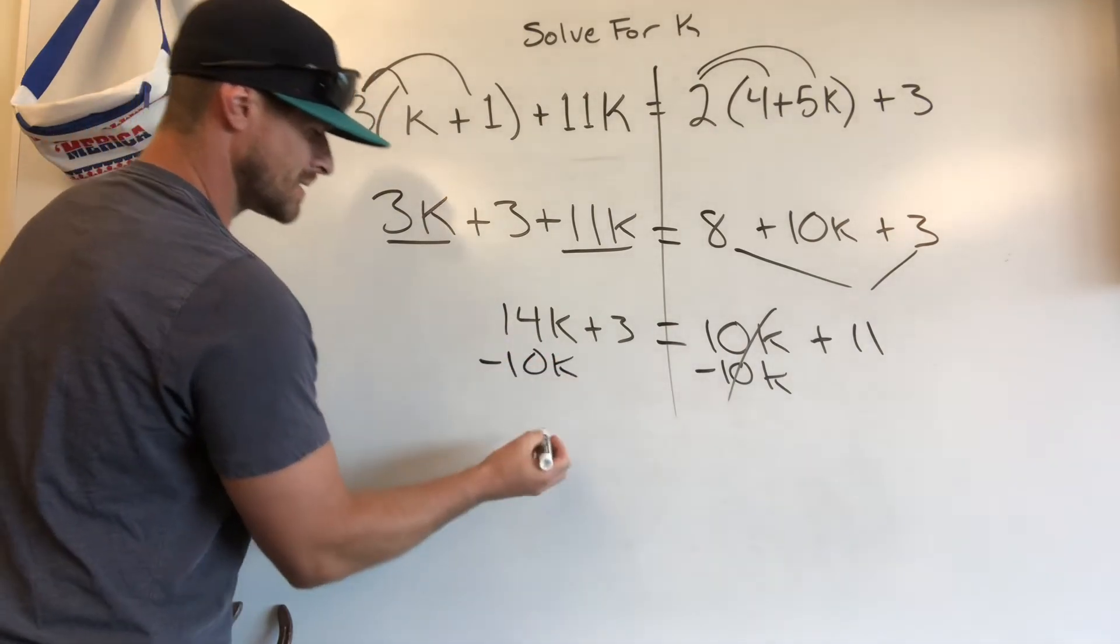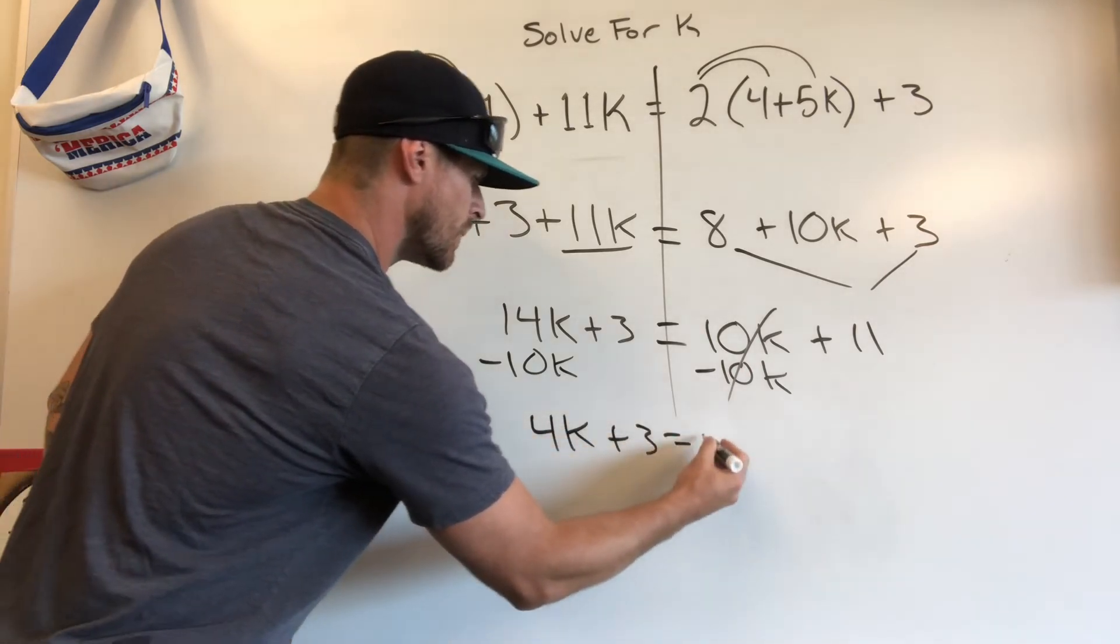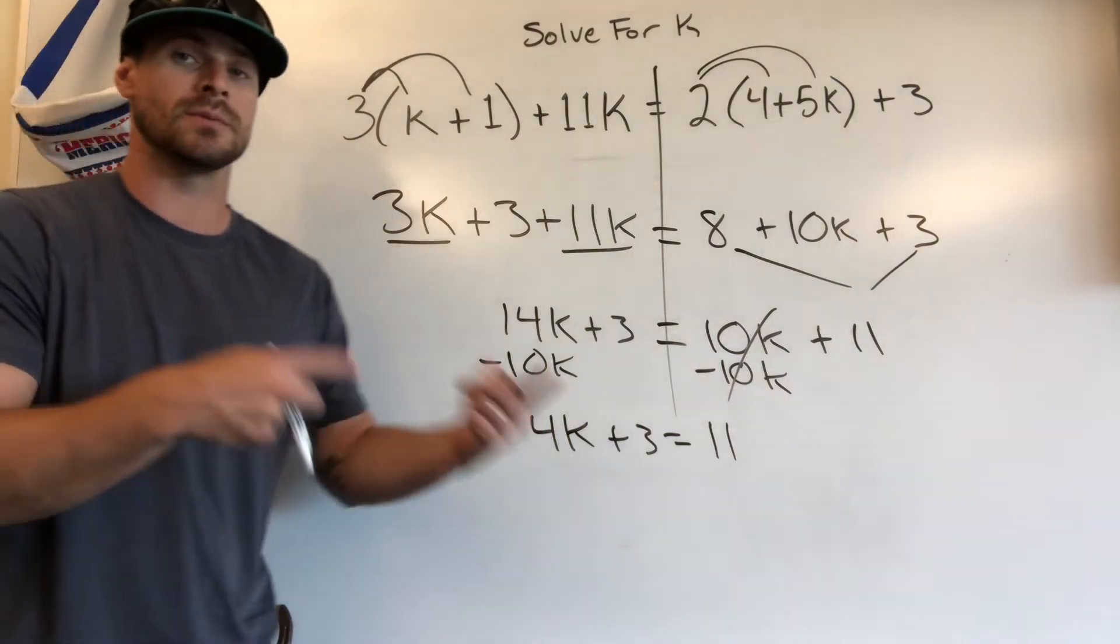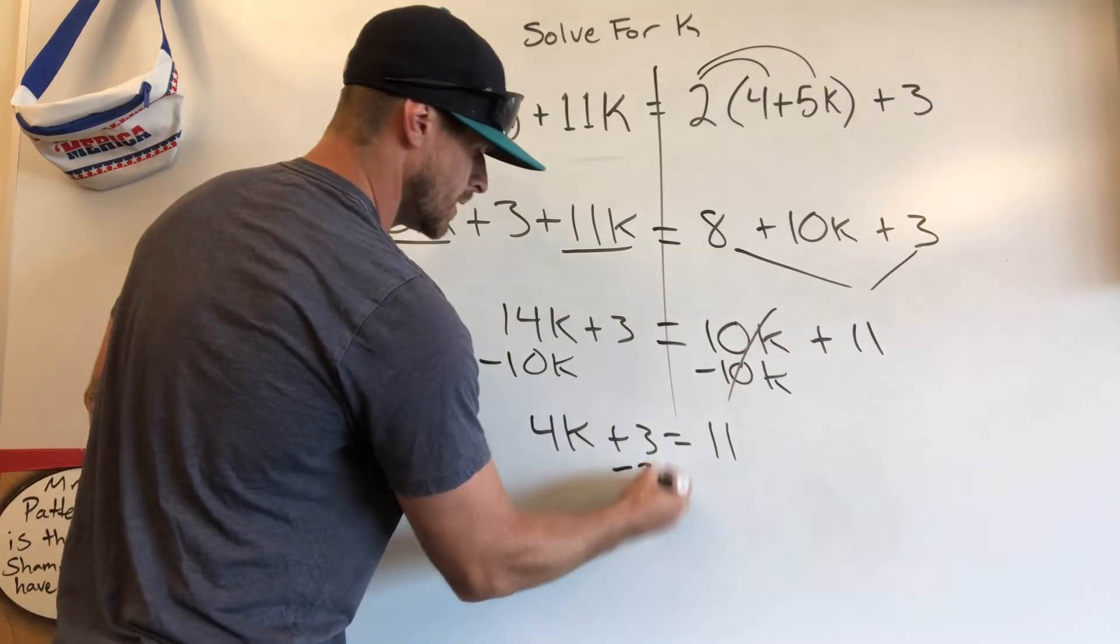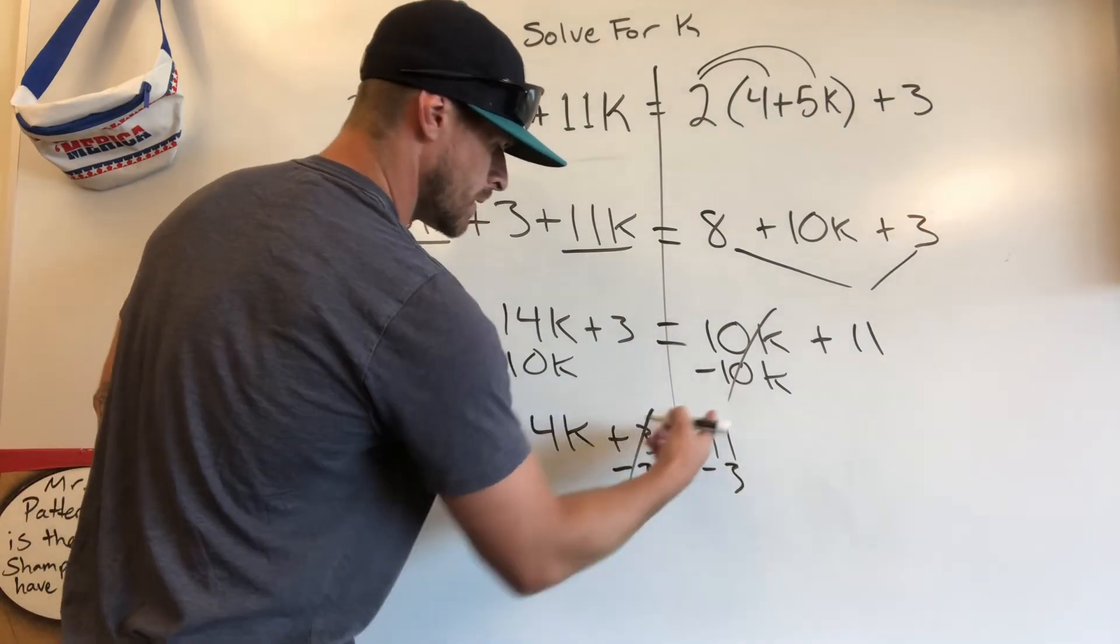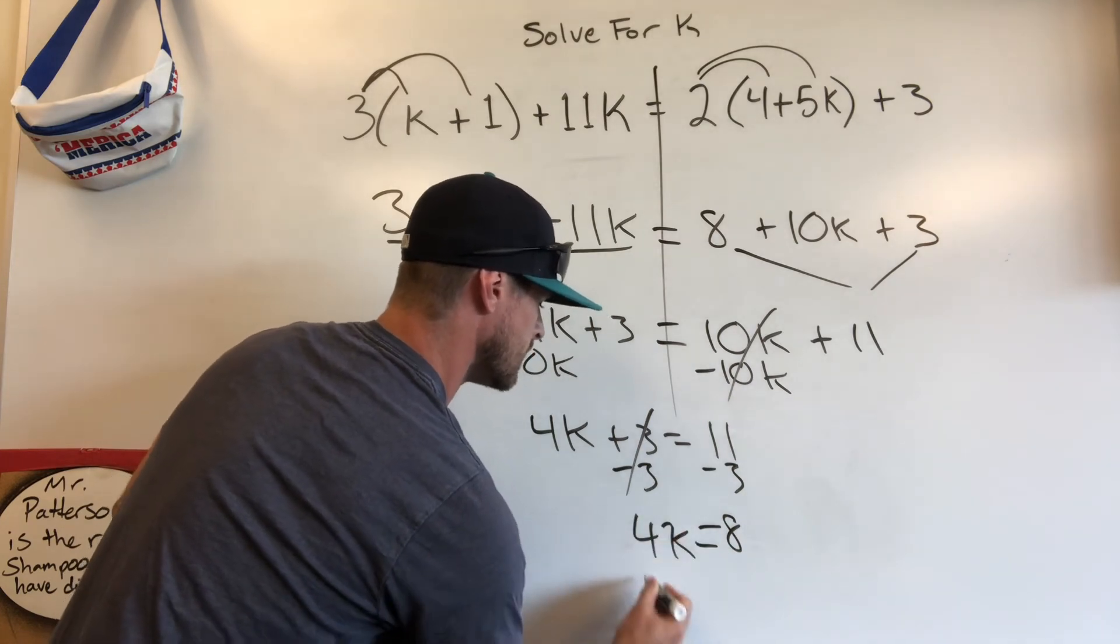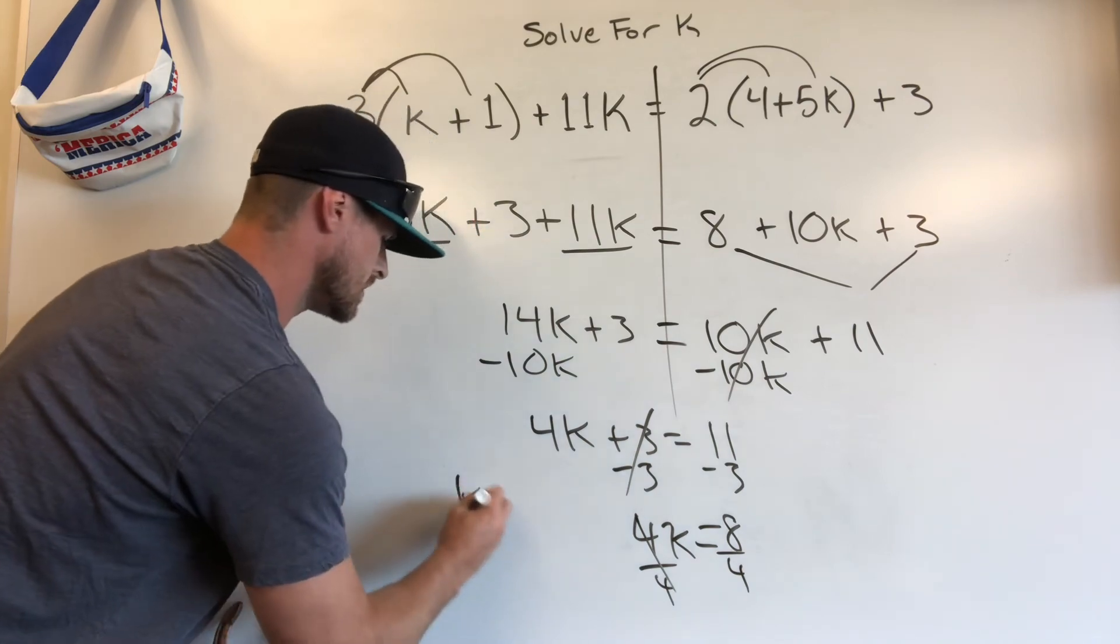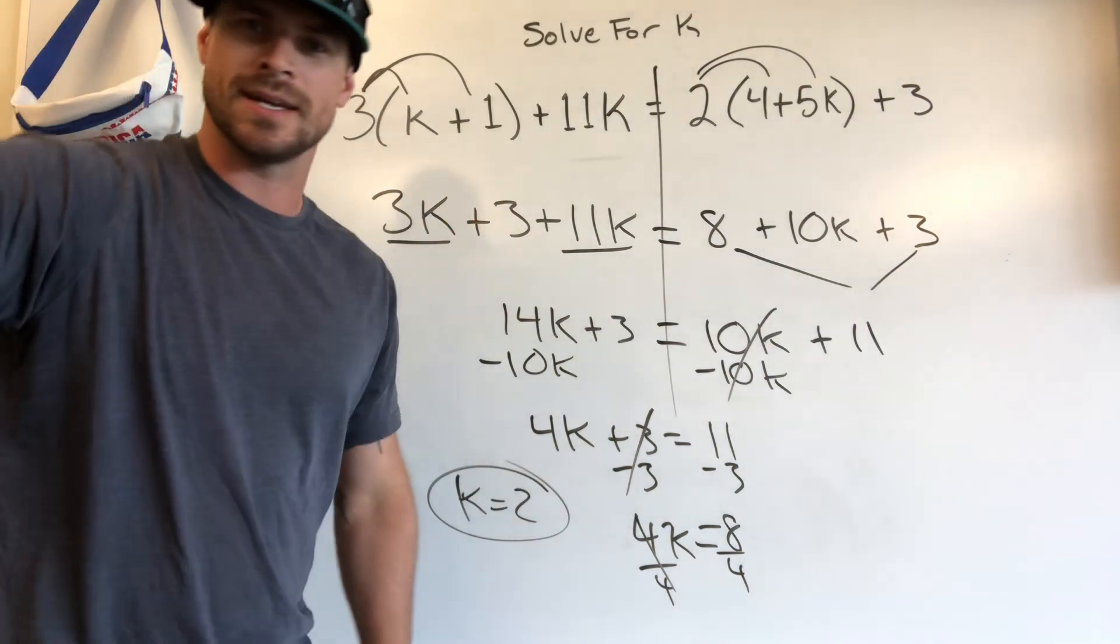14 minus 10 is going to leave me with 4k plus 3, and by golly, we found ourselves in a two-step equation. If you're watching this video, you probably know how to solve two steps. We're only two steps away. Get rid of this constant, take it away. I'm going to leave you with 8 equals 4k. Divide by 4. K is equal to 2. Study hard, and good luck on your upcoming test.